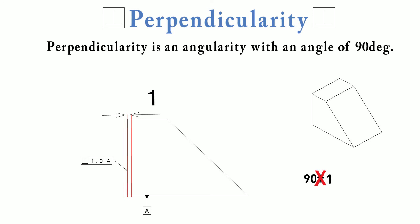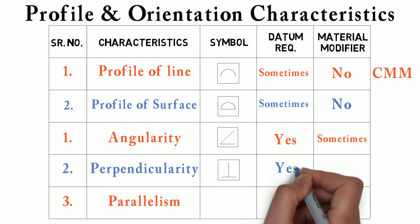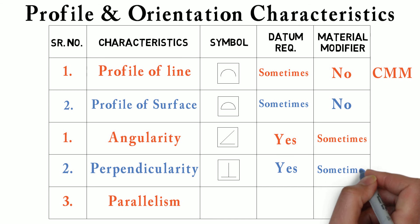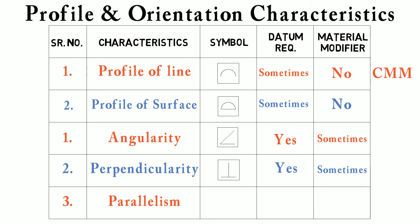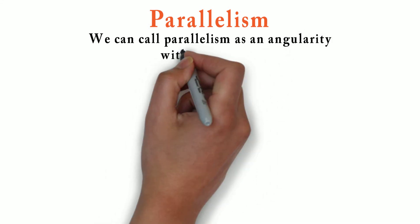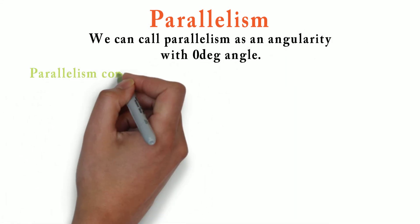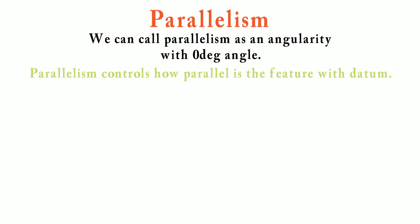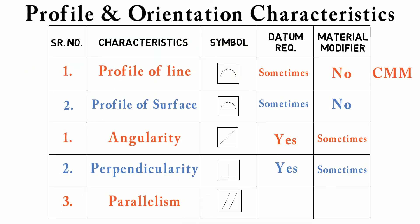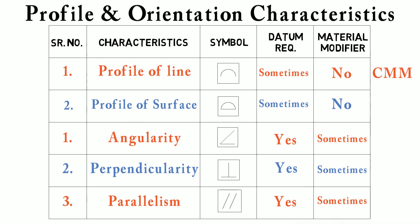We need a datum to control perpendicularity, so datum requirement is yes. We also use material modifiers sometimes. We can inspect perpendicularity similar to angularity. Our third and last orientation tolerance is parallelism. Parallelism can be called angularity with 0 degree angle. Parallelism controls how parallel the feature is with respect to our datum. We show parallelism with two parallel lines. Datum requirement is yes, and we can use material modifiers here. We inspect parallelism similar to angularity, with the help of a height gauge.